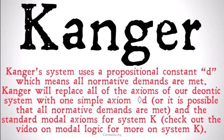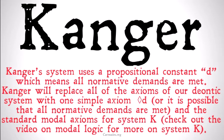Kanger's system uses a propositional constant, D, which is a representation of the statement that all normative demands are met. D just means all normative demands are met. Kanger replaces all of the axioms of the Deontic system with one single axiom: it's possible that D, or it's possible that all normative demands are met — plus the standard modal axioms for system K. Check out the video on modal logic for more on system K. The key is we're not really adding specifically Deontic axioms; we're using axioms that already existed in Alethic modal logic. So it would be a reduction, but we're going to see a problem soon.